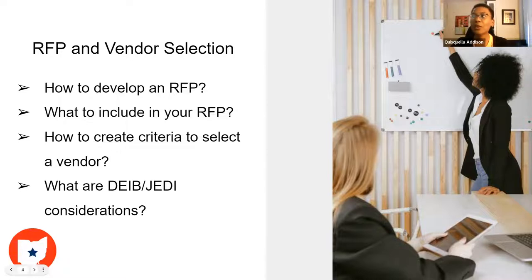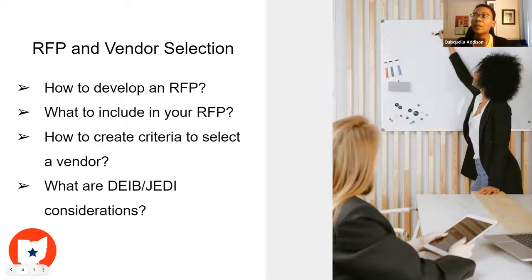We're going to talk about what to include in the RFP, how to create the criteria to select — and part of that criteria ensures equity and fairness — and then what are some DIB and JEDI considerations: diversity, equity, inclusion, belonging, or justice, equity, diversity, and inclusion.